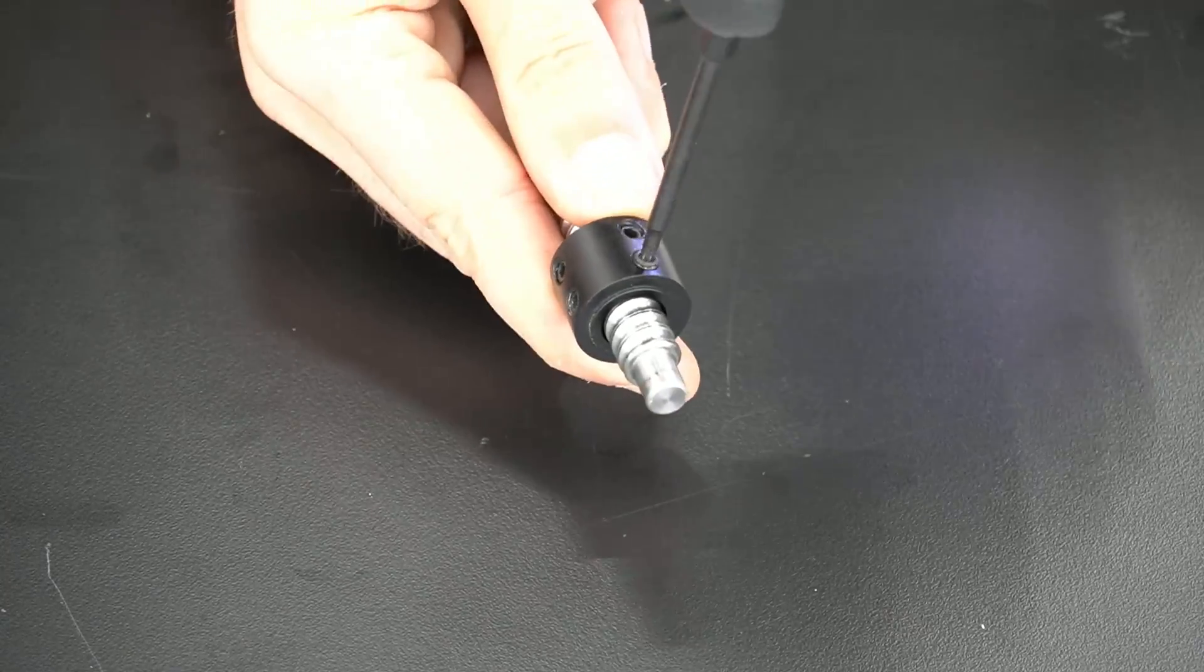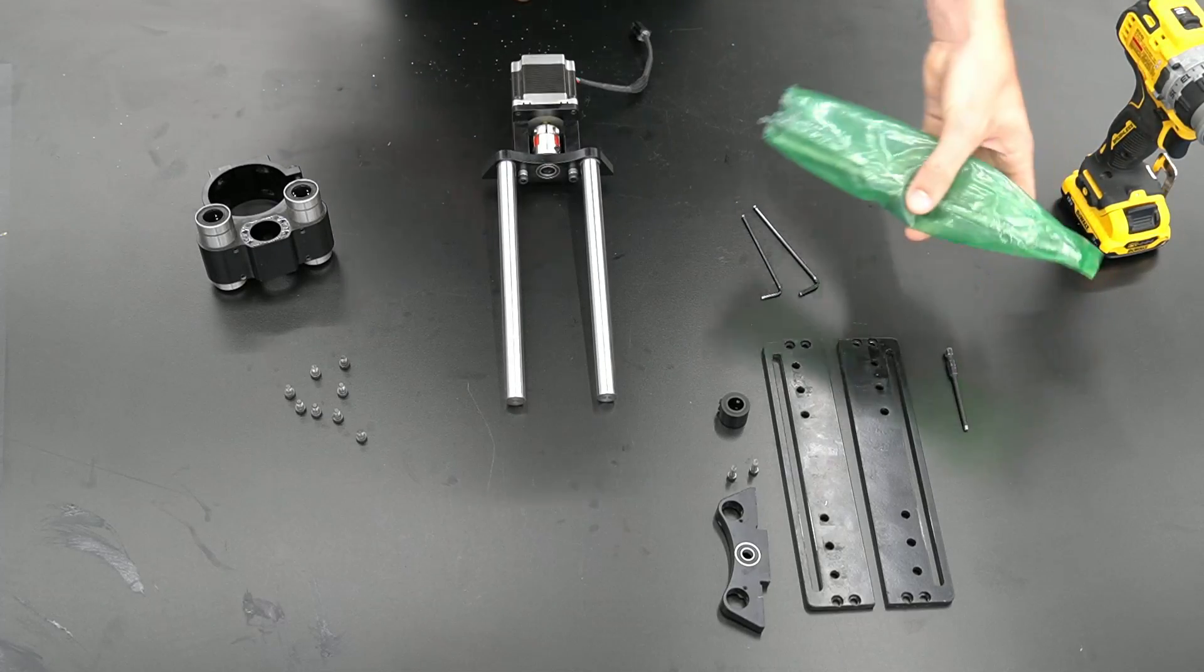Next, remove the black coupler on the top of the ball screw by loosening the four set screws on it.